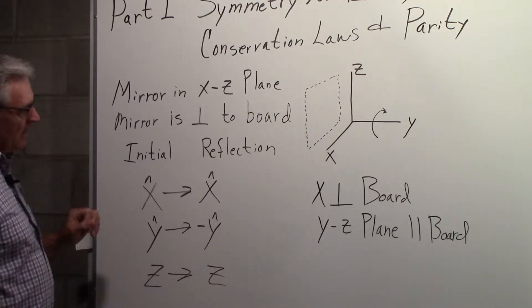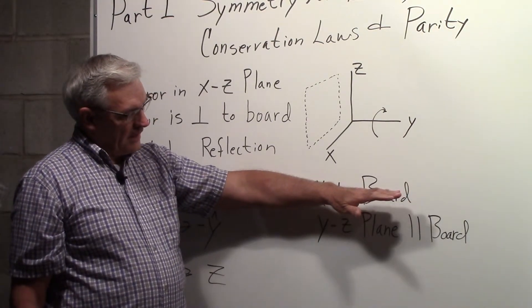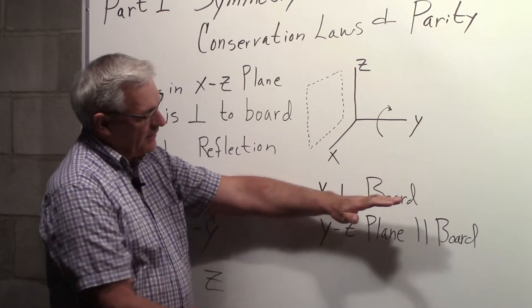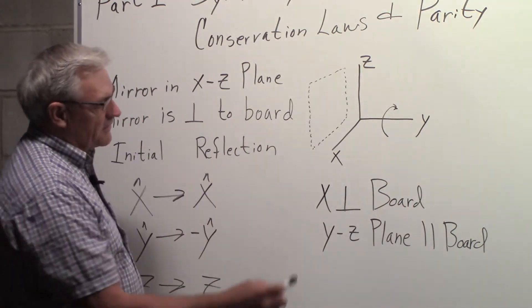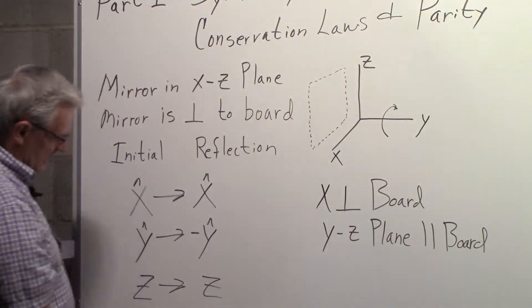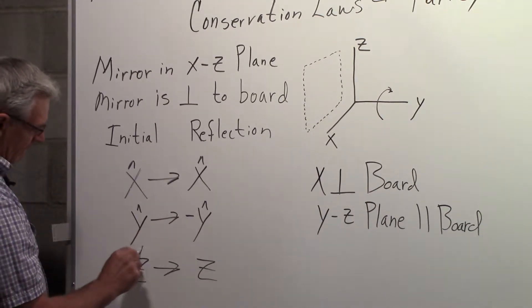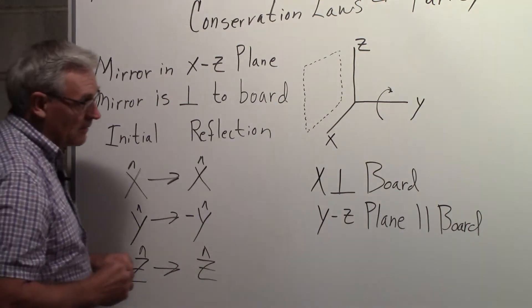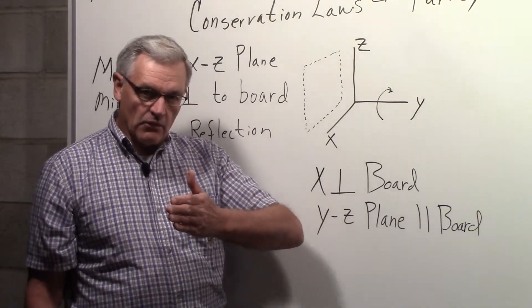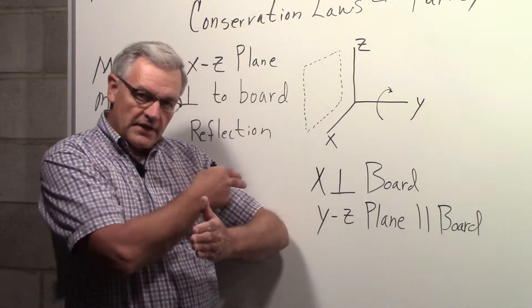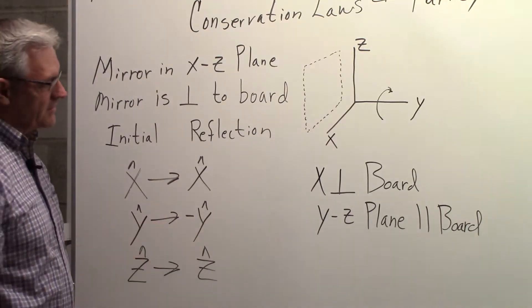The mirror is perpendicular to the board. If you consider your arm to be a vector and the board was actually the mirror, when you look in the mirror you would see your arm pointing in the same direction as outside the mirror. So the X and Z axes point in the same direction — X to X, Z to Z. But in the Y direction, if my arm is a vector pointing away from the mirror, in the mirror it looks like it's going into the mirror, so the Y axis goes to the minus Y direction.